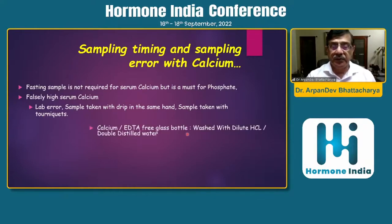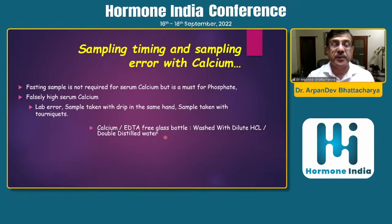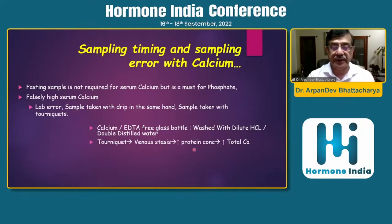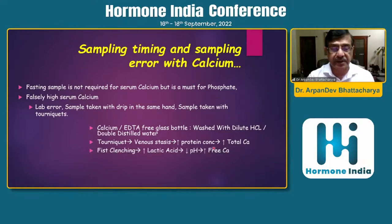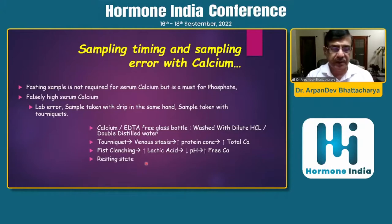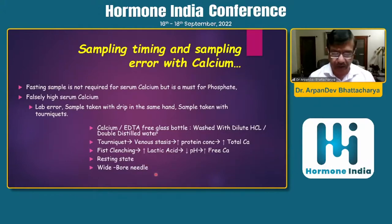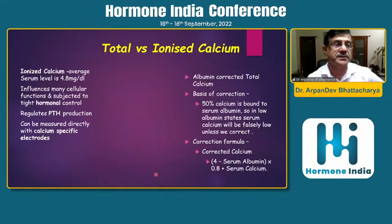The sample should be taken EDTA-free. Phlebotomy technique is important — the sample should be taken without excessive squeezing, fist-clenching, or tourniquet use. A tourniquet causes venous stasis, thereby total calcium can go up, and fist-clenching can raise free ionized calcium. The sample should be taken in a resting state, and a wide-bore needle should be used to avoid hemolysis.